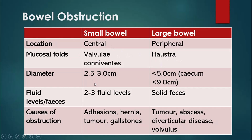Regarding diameter, there is a rule called the 3-6-9 rule which is easy to remember. 3 is for the small bowel — it needs to be less than 3 cm. The large bowel needs to be less than 6 cm. And for the cecum, it needs to be less than 9 cm. So if your small bowel measures more than 3 cm, you know it is dilated.